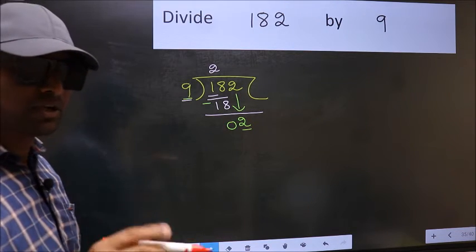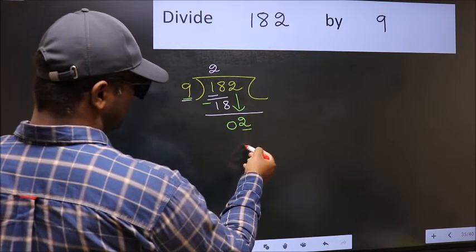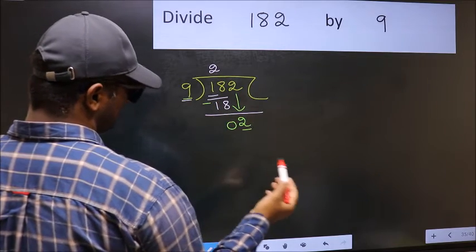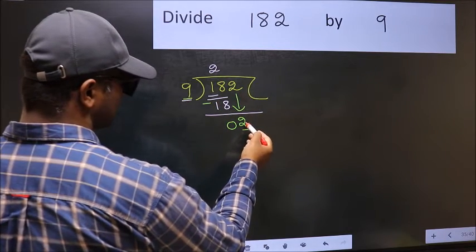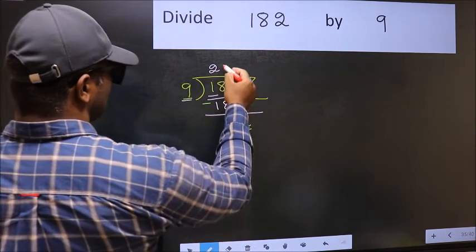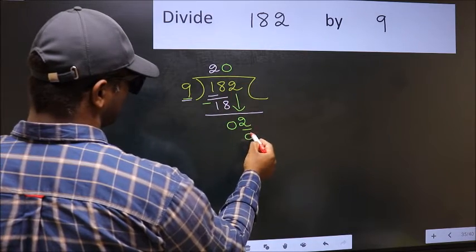Instead, what you should think of doing is, which number should we take here? If I take 1, we will get 9. But 9 is larger than 2. So, what we should do is, we should take 0. So, 9 into 0 is 0.